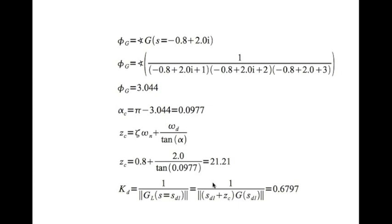Now we need to find the parameter kd. kd is given by 1 divided by GL(s) evaluated at s = s_d1, where GL is the original plant transfer function multiplied by the transfer function of the zero (s + zc), without the kd parameter. This gives kd equal to 0.6797.